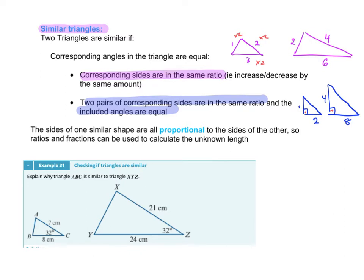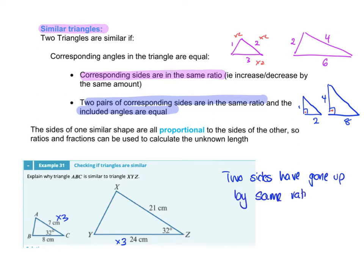Let's look at an example: explain why triangle ABC is similar to XYZ. You can see that the sides have been multiplied by a factor of three. So we say that two sides have gone up by the same ratio, which was 3 over 1, and both triangles share a similar angle. So we know these triangles are similar because they have a corresponding angle.